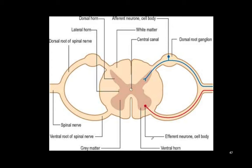Motor neurons are located in the anterior horn and sensory neurons in the posterior horn — this is where neurons synapse on second-order neurons for some of our tracts. The dorsal root ganglion contains the cell bodies for most of our sensory neurons.